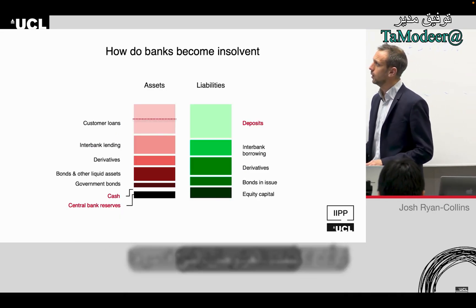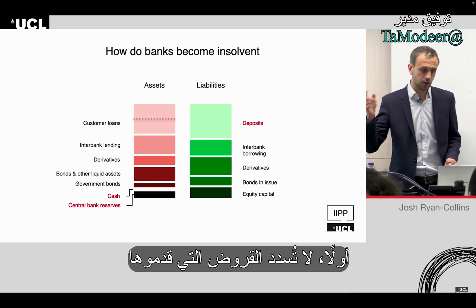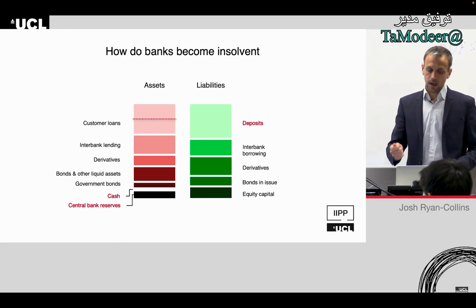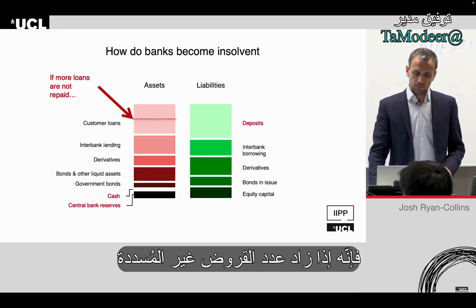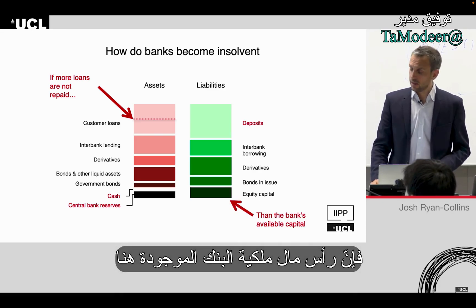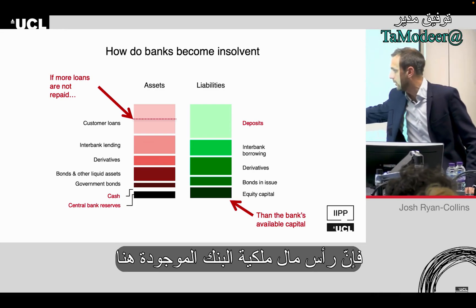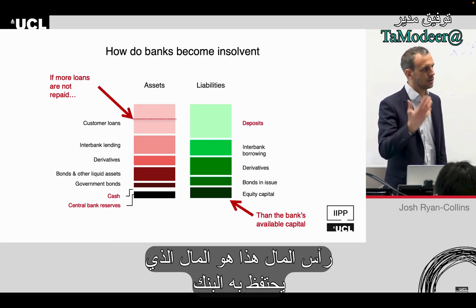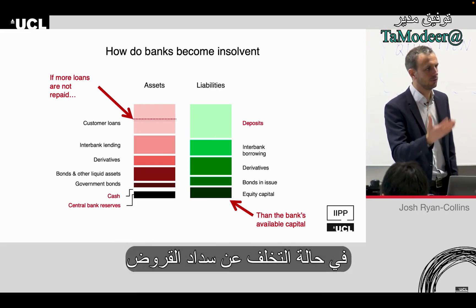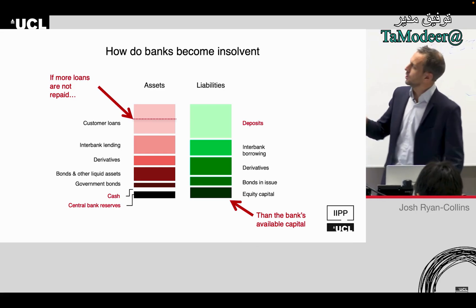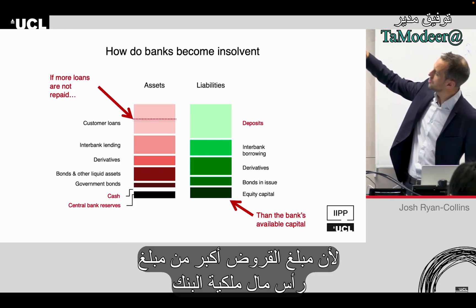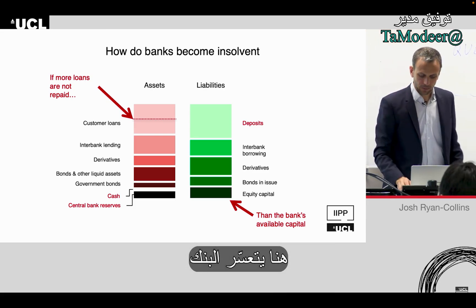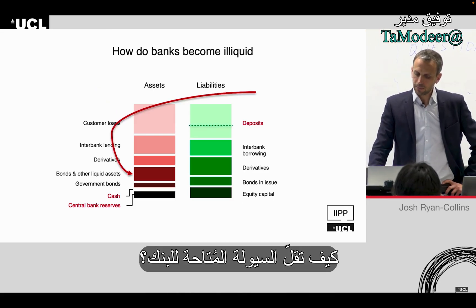How do banks become insolvent? The loans they've made are not paid back. If enough loans are not repaid — specifically, if the value of defaulted loans exceeds the bank's equity capital, which is the money the bank holds in reserve against loan defaults — then because the amount of loans not repaid is larger than that equity capital buffer, the bank will become insolvent.